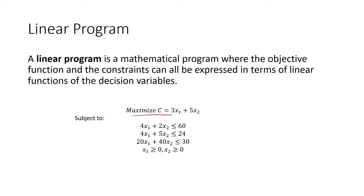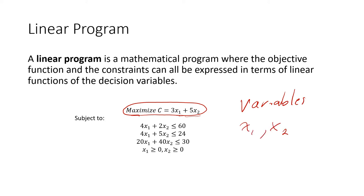For example, here is an objective function: 3x1 plus 5x2, with two variables x1 and x2 — those are the things you're allowed to change. You have the objective function 3x1 plus 5x2 that you want to make as large as possible. If x1 and x2 could be anything, you could make it infinitely large — that's where your constraints come in. In a linear program, everything is linear: none of your variables are ever squared, never square roots, never exponential — they are just linear, a number times your variable plus a number times your variable.